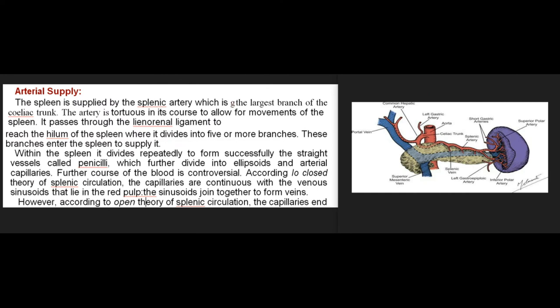Arterial supply: the spleen is supplied by the splenic artery, the largest branch of the coeliac trunk. The artery is tortuous in its course to allow for movements of the spleen. It passes through the lienorenal ligament to reach the hilum, where it divides into five or more branches. These branches enter the spleen; within the spleen they divide repeatedly to form straight vessels called penicilli.